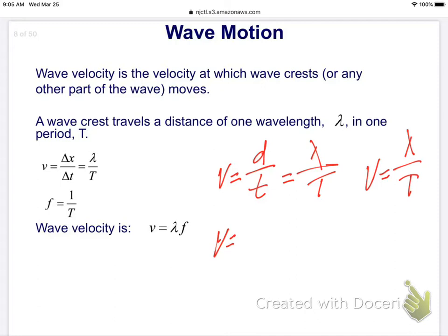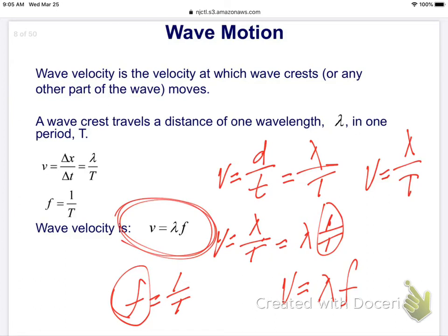We can take this equation, velocity equals lambda over period, and say that's the same thing as lambda times one over the period. And if we know that frequency is equal to one over the period, we can put frequency in for one over T, and we get this equation. Velocity equals lambda f, which is a very important equation.